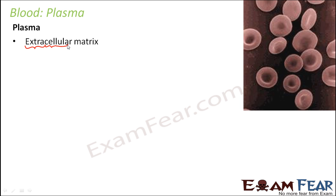blood consists of different components. The entire matrix, that is the entire background or the entire medium, is filled with plasma. So plasma is basically that fluid which fills the entire space. Let's suppose this is your room — inside this room you have one chair, one table, one sofa, and the remaining space is filled with air. In a similar way, in case of blood also, blood consists of many different components: red blood cells, white blood cells, platelets, and all the remaining extracellular space is filled up by this fluid plasma.